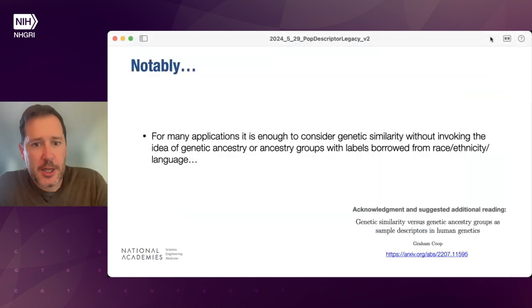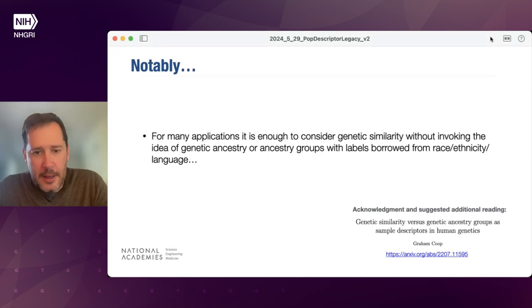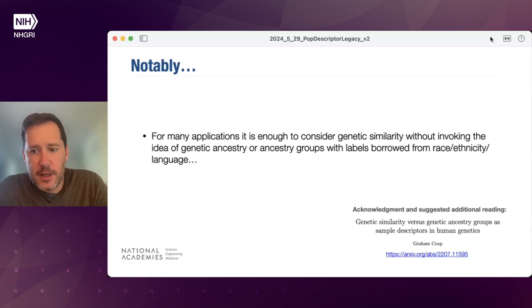Notably, for many of those application areas, it was noted that it's enough to consider genetic similarity without invoking the idea of genetic ancestry or ancestry groups. That's particularly helpful as ancestry groups are often labeled with terms borrowed from race, ethnicity, or language as descriptors. I'm going to dwell on that because it's essential for thinking about what might be possible going forward, but it also presents unique challenges with regards to legacy data.